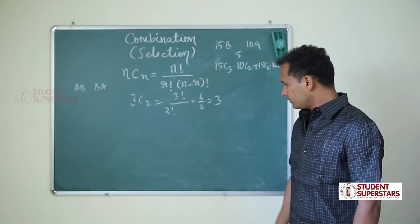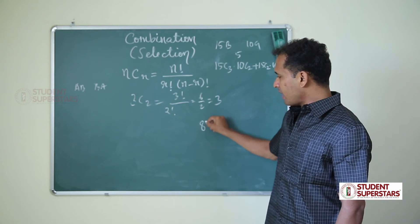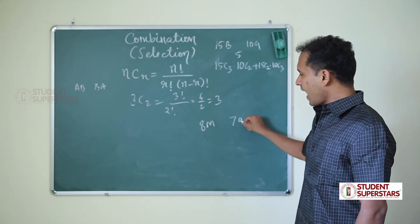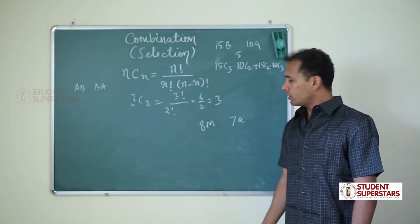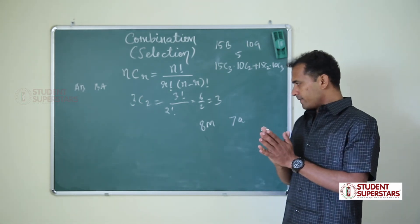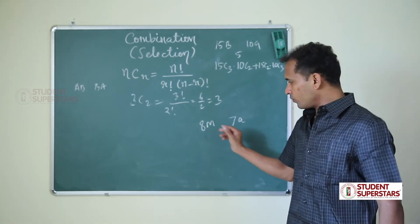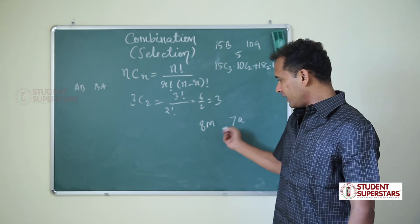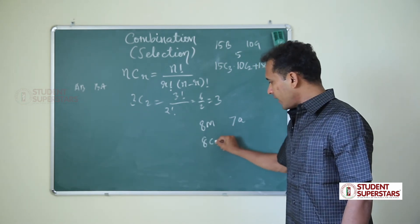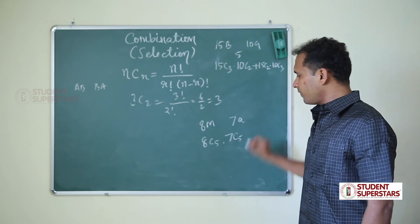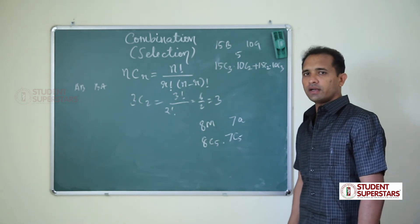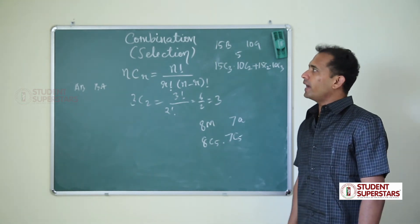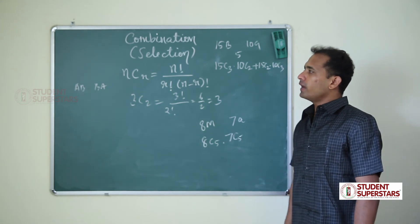For example, there are 8 mangoes and 7 apples. We should form a basket of 5 plus 5, 10 fruits. From 8 mangoes, we are selecting 5: 8C5. And 7C5. So the same way, we can find combination for any value.